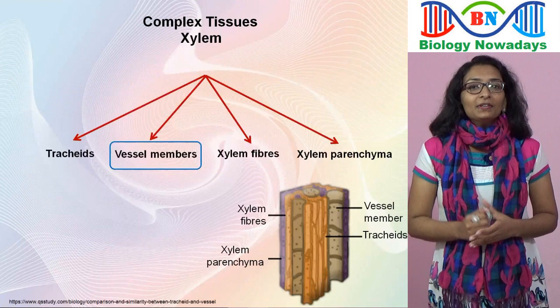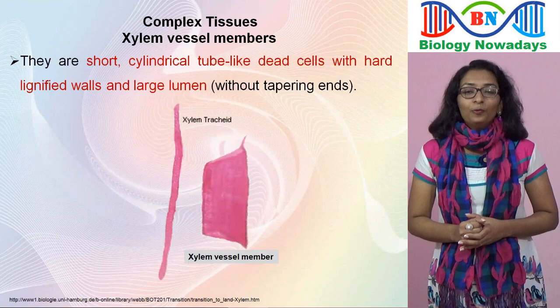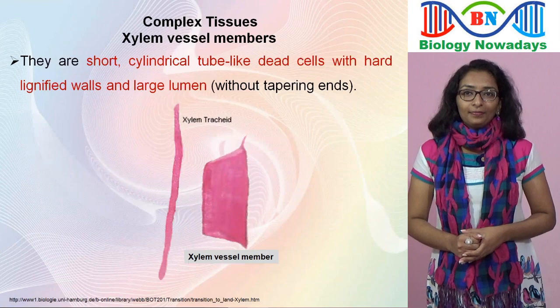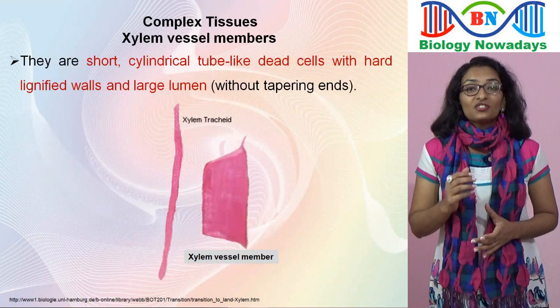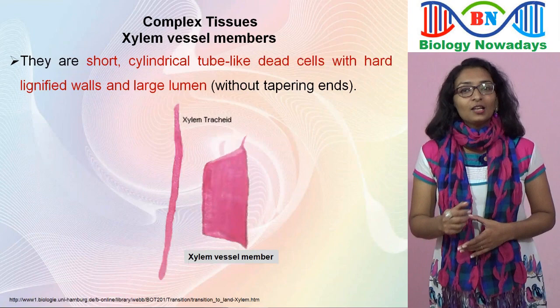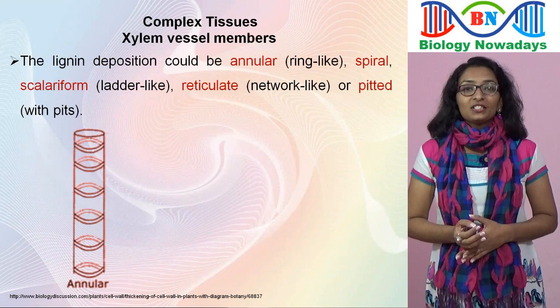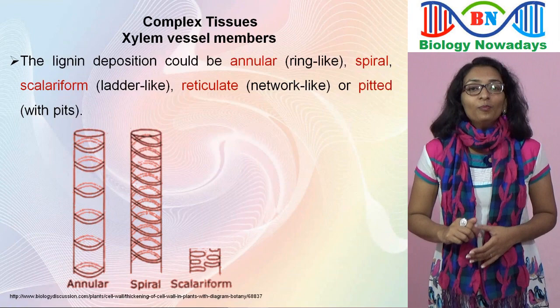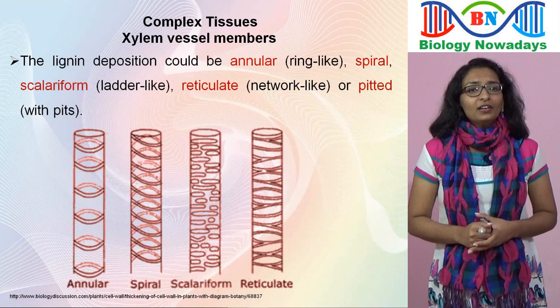Vessel members are short, cylindrical or tube-like dead cells with hard lignified walls and a larger lumen than tracheids. They don't have tapering ends. The lignin deposition on the cell walls of vessel members is not uniform — it could be annular thickening in the form of rings, spiral or helical thickening, scalariform or ladder-like thickening, reticulate or network-like thickening, or pitted thickening.